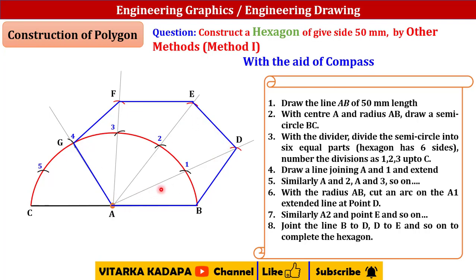So first we have to divide this semicircle into six equal parts, extend the line, take the radius and cut it on the arc, and join the remaining lines. This is for hexagon.